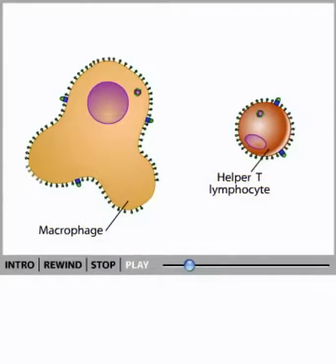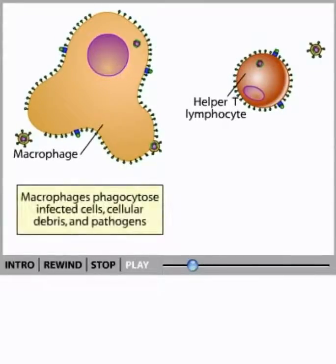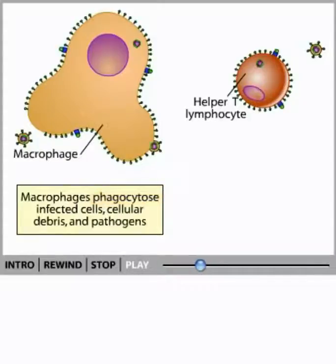When HIV infects macrophages, the immune system loses an important scavenger. Healthy macrophages prowl the body's tissues and engulf and digest — or phagocytose — infected cells, cellular debris, and pathogens.